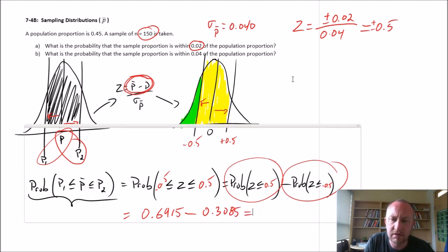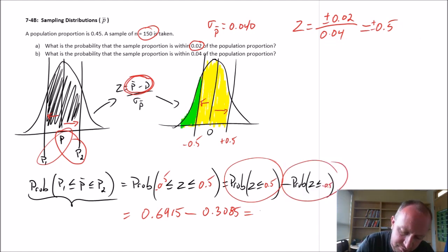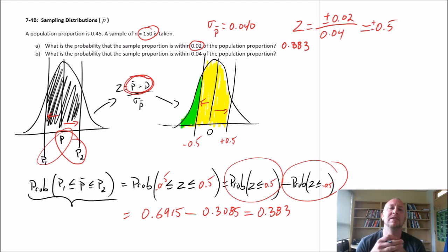And so that difference will give us our yellow space, our probability of interest: 0.6915 minus 0.3085 equals 0.383. So there's our answer there, 0.383. That's the probability that if we take a sample of 150, we'll be within 0.02 of the true population proportion.